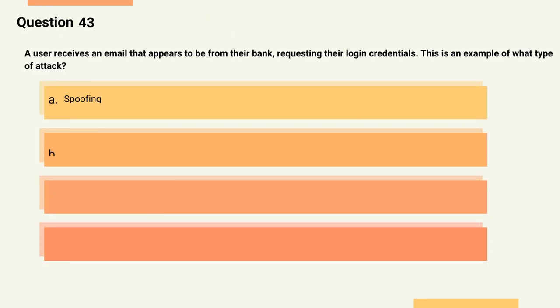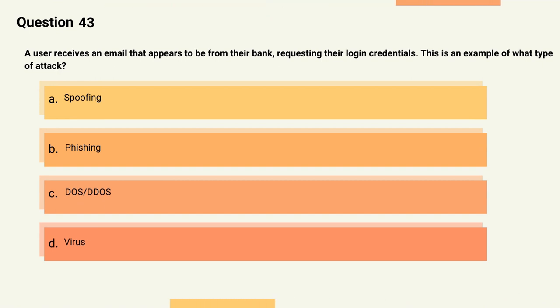Question 43: A user receives an email that appears to be from their bank, requesting their login credentials. This is an example of what type of attack? Options: A) Spoofing, B) Phishing, C) DoS/DDoS, D) Virus. The correct answer is Option B, Phishing.